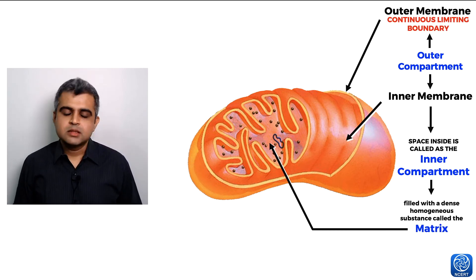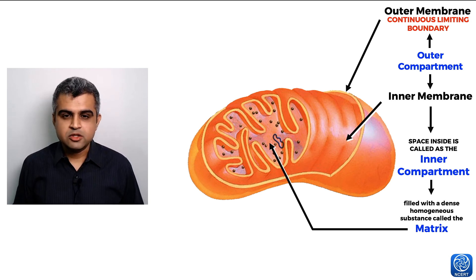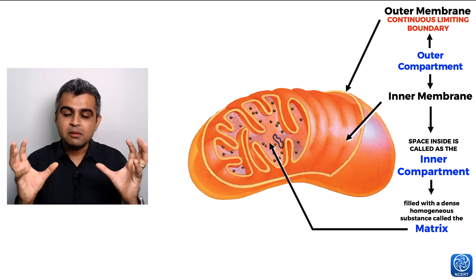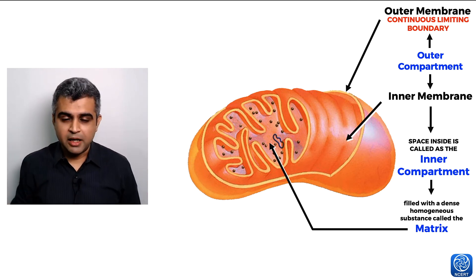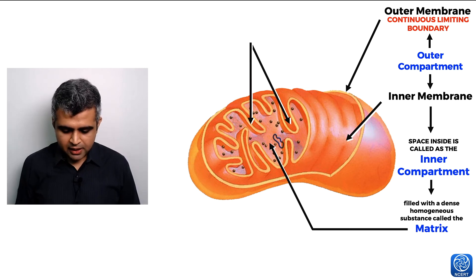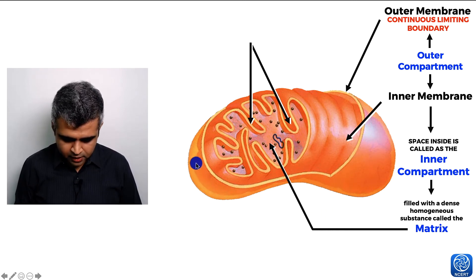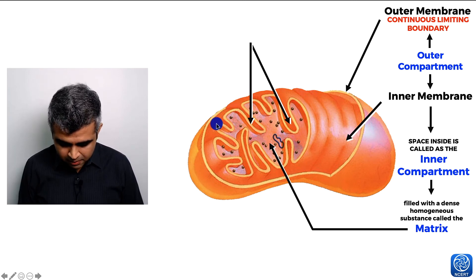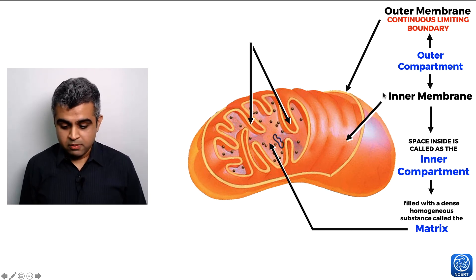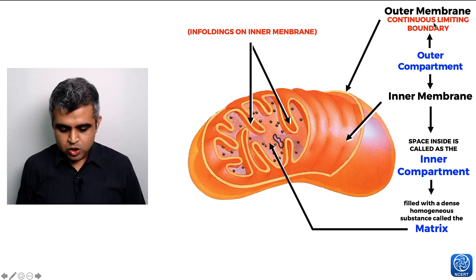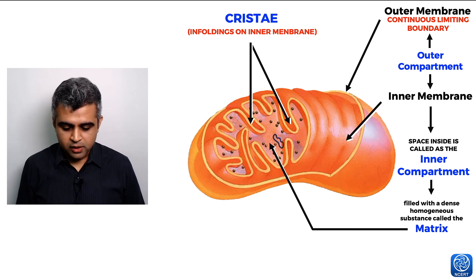The outer membrane is the continuous limiting boundary of the mitochondria — it is extremely smooth and continuous. The inner membrane, however, shows numerous infoldings. These infoldings of the inner membrane are called cristae — crista is singular, cristae is plural.